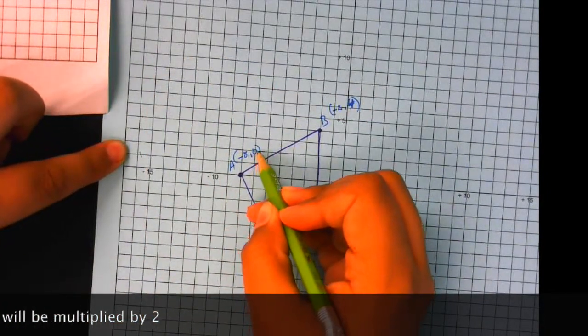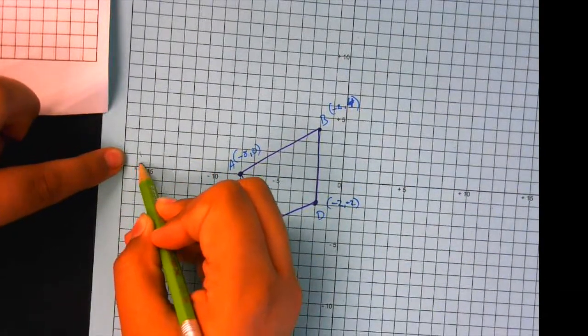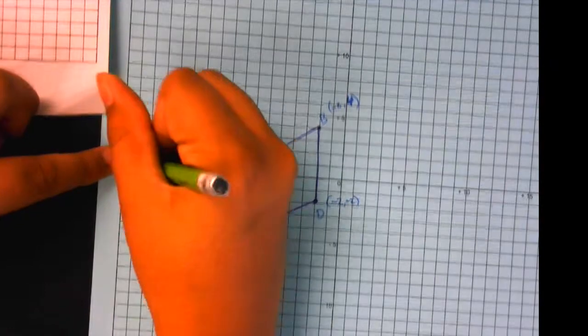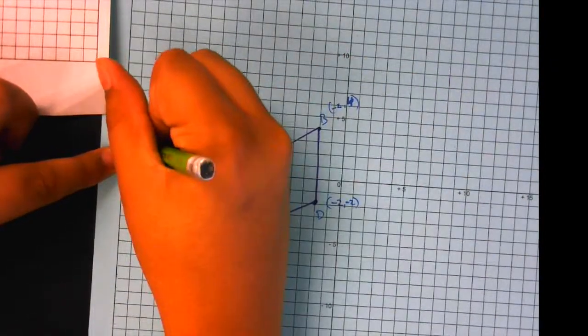So that's negative 16. And then we do zero, but you can multiply zero by two because it would just be zero. So we just leave it on this line. So over here, this would be A prime.